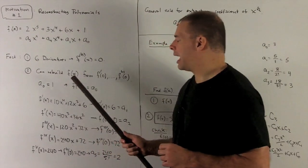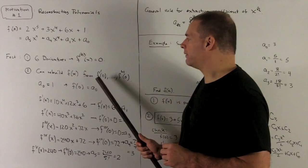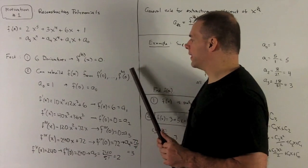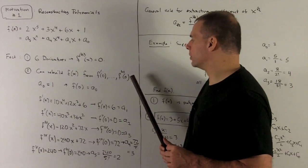Another thing, I can rebuild f(x) if I know the value of the derivative, first derivative through the 5th derivative, at the point 0. Why is that? Let's see what happens.